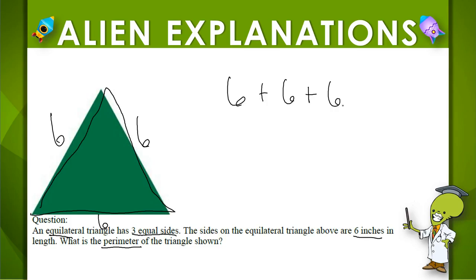Or since this is a repeated addition problem, you can think of it as six times three. Either one, whichever one you prefer, you come up with the correct answer and the correct perimeter no matter which way you decide to solve it. Six plus six plus six, or six times three.